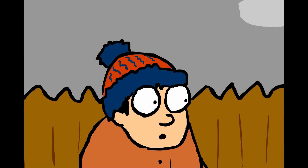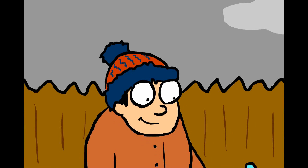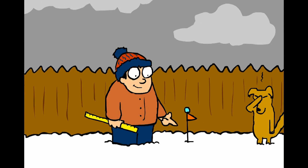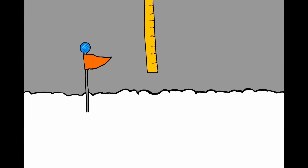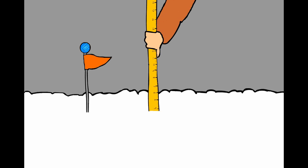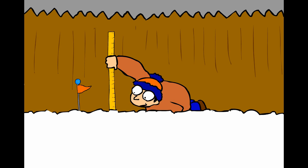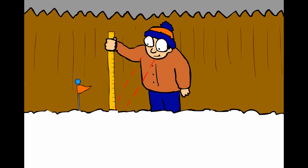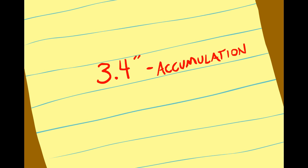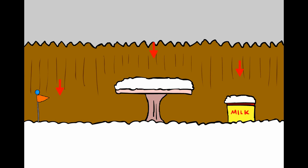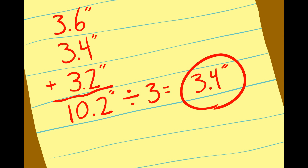To measure accumulation, first find your snow measurement board. It should be easy, since you remembered to mark its location with a flag or reflector. Slide your snow stick or ruler straight down into the snow towards your snow measurement board. Try to get down close to where the ruler meets the snow, because if you are looking at an angle, you will get an inaccurate measurement. Write down the measurement to the nearest tenth of an inch. You can also take multiple measurements in representative locations and calculate an average measurement.